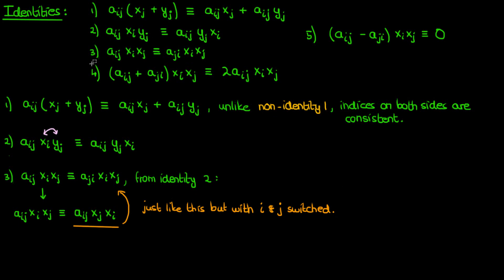So therefore, by the transitive property of equality, aij times xi times xj is identically equal to aji times xi times xj.